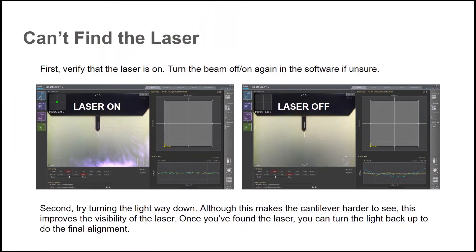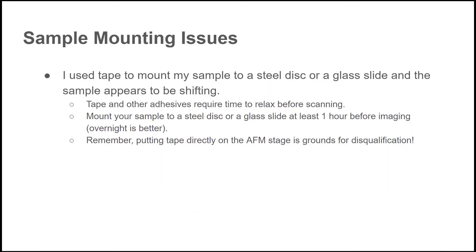Another common issue is trouble finding the laser. First, check that the laser is on — the intensity usually shows a negative value if the laser is off. Second, try turning the microscope light way down; although this makes the cantilever harder to see, it does improve the visibility of the laser. The final issue covered here has to do with mounting your sample. We don't recommend using tape to mount your sample, as the system vacuum is usually sufficient. But if it is necessary to mount a sample to a sample holder, tape and glues need time to relax after being applied, or it is possible to observe shifting in the sample. Remember to never apply tape directly to the AFM stage — doing so is grounds for disqualification.